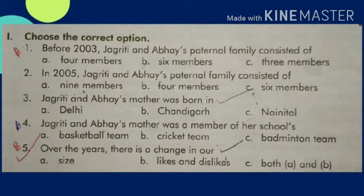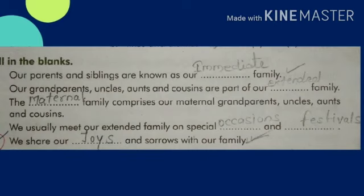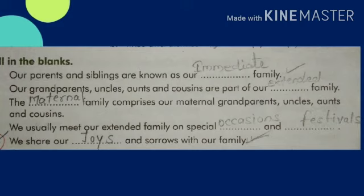Five, over the years there is a change in our — C, both A and B. Fill in the blanks. First, our parents and siblings are known as our immediate family. Second, our grandparents, uncles, aunts and cousins are part of the extended family. Third, the maternal family comprises our maternal family. Four, we usually meet our extended family on special occasions and festivals. Five, we share our joys and sorrows with our family.